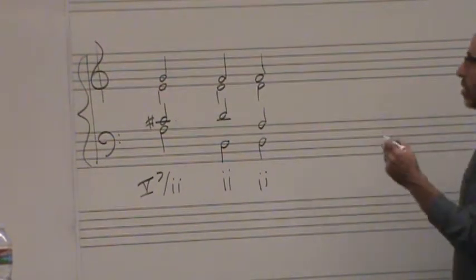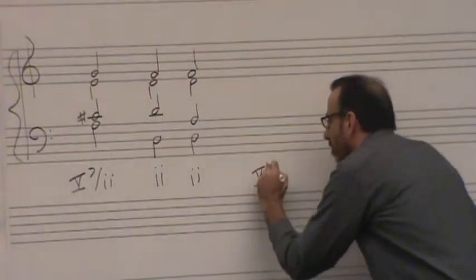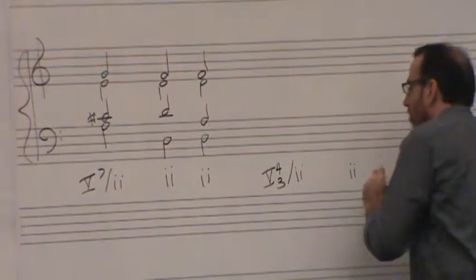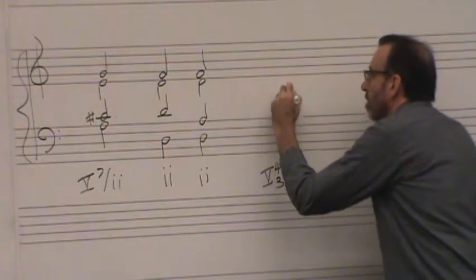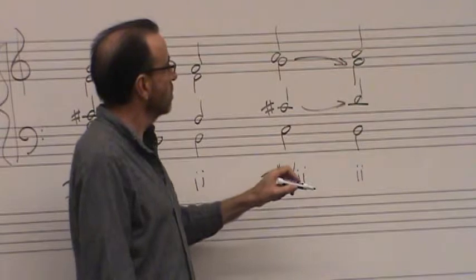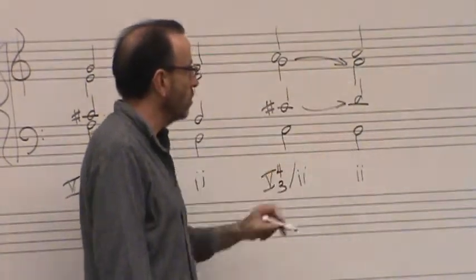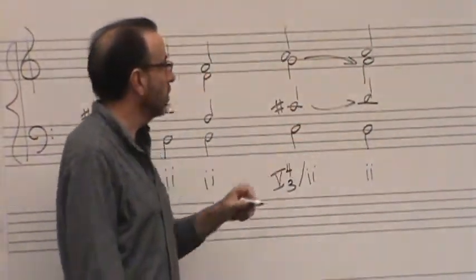And the same would be true of these chords in inversions. So if I had V4/3 of ii to ii, then that would be this chord. We can fill in the other notes to get it like a normal position triad. And then we'll see two roots, a 3rd, and a 5th.